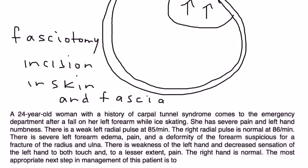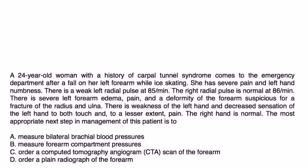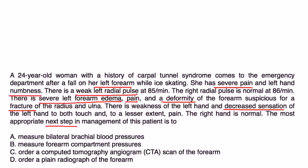Let's look at some clinical vignettes. A 24-year-old woman with a history of carpal tunnel presents to the emergency department after a fall on her left forearm while ice skating. She has severe pain, left hand numbness, a weak left radial pulse, severe left forearm edema, pain and deformity suspicious for a radius and ulna fracture, weakness and decreased sensation of the left hand. The most appropriate next step is to measure the compartment pressures — choice B.